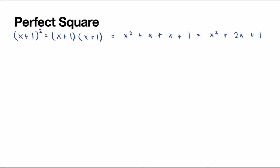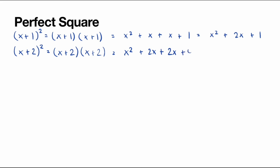The next perfect square will be x plus 2 squared, which is the same thing as x plus 2 multiplied by x plus 2. Using the FOIL technique to expand, we get the first terms: x times x, so x squared; the outer terms: 2 times x, which is plus 2x; the inner terms: 2 times x also, so plus 2x again; and the last terms: 2 times 2, which is plus 4. We can write this as x squared plus 4x plus 4.